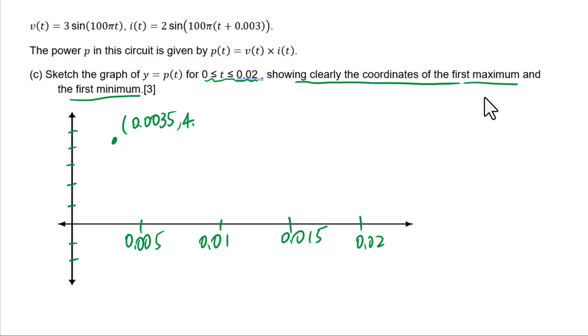0.0085, -1.24. The other maximum point 0.0135, we estimate over here. The second minimum point 0.0185, -1.24, estimate over here also. We need a starting point and ending point 0, 0.02. Now let's connect all these points smoothly.